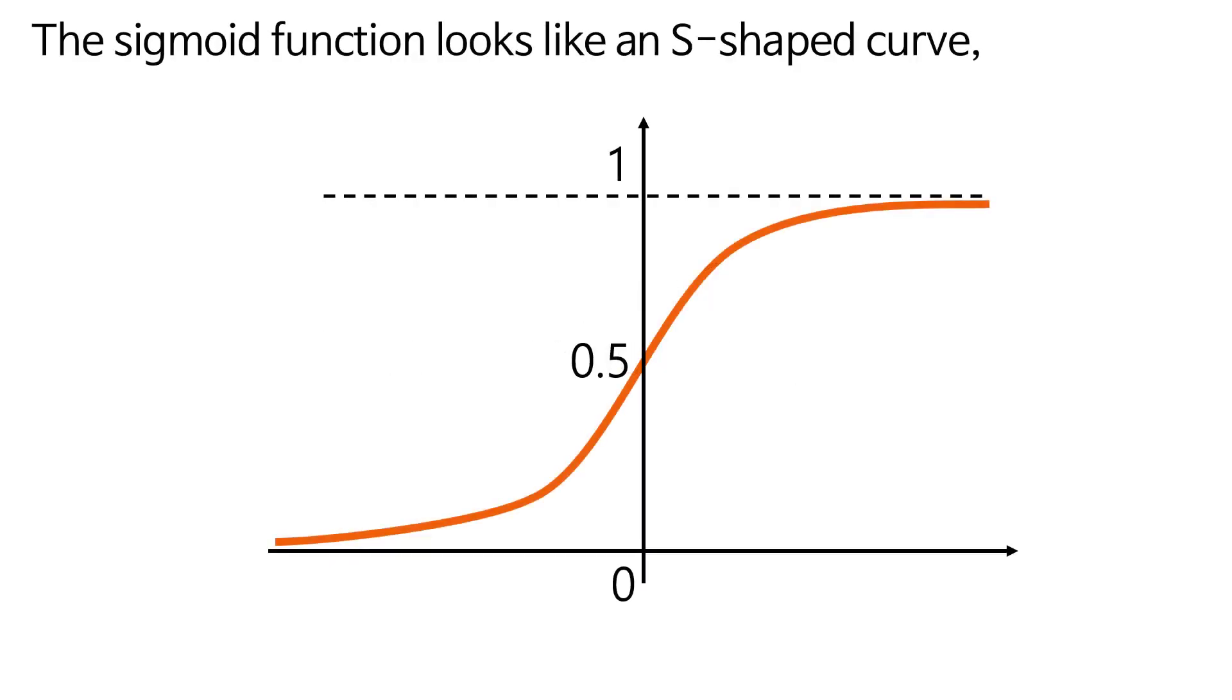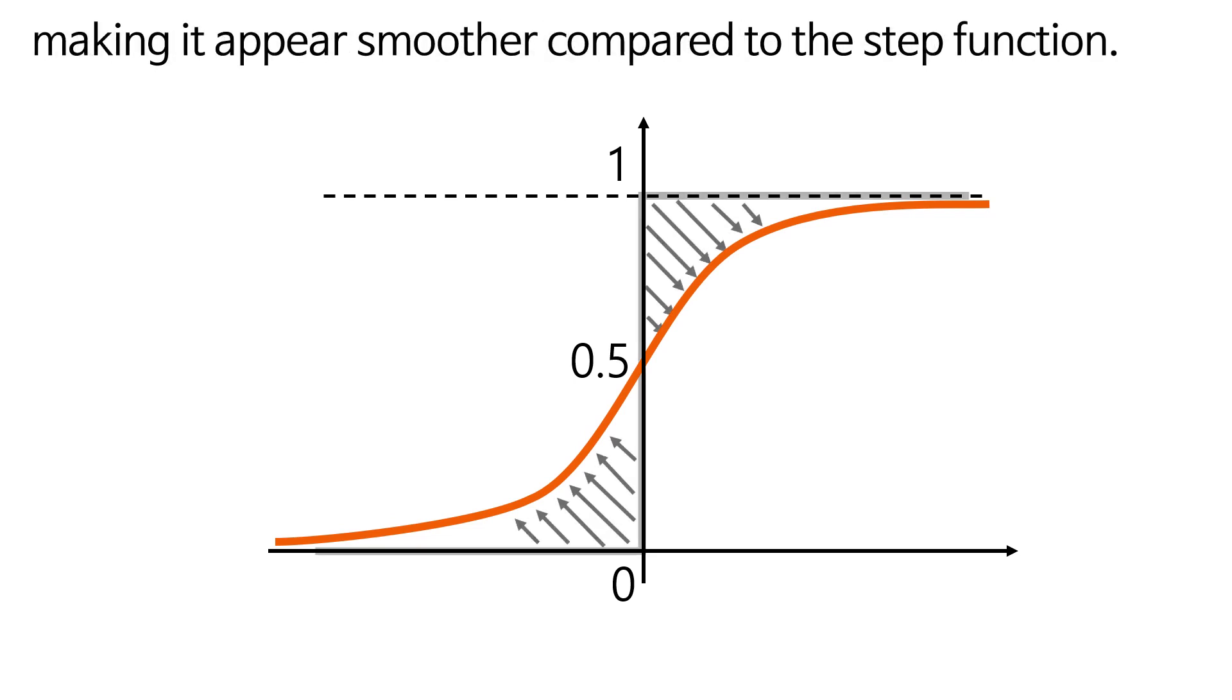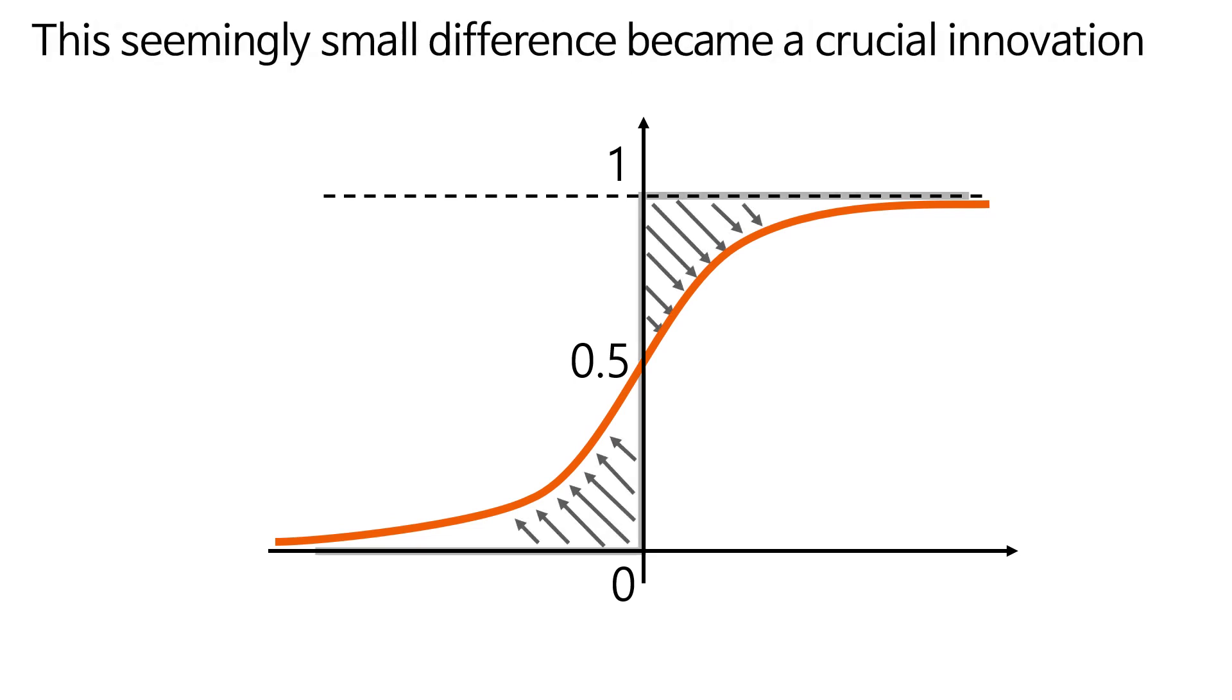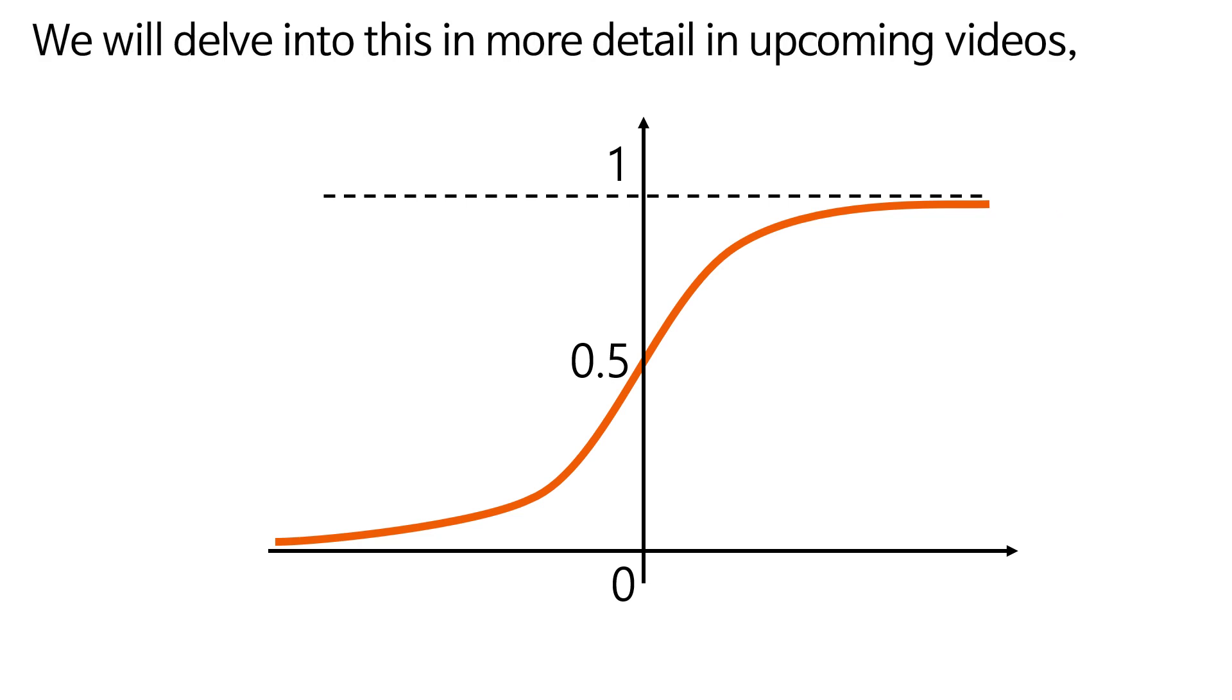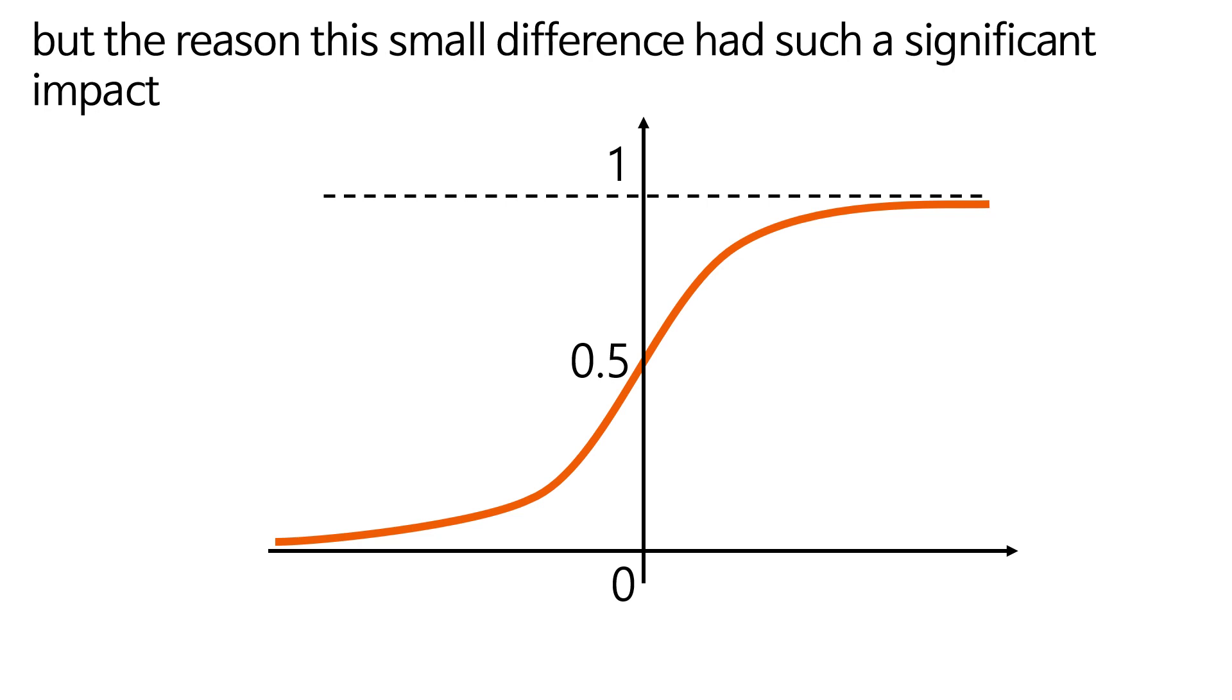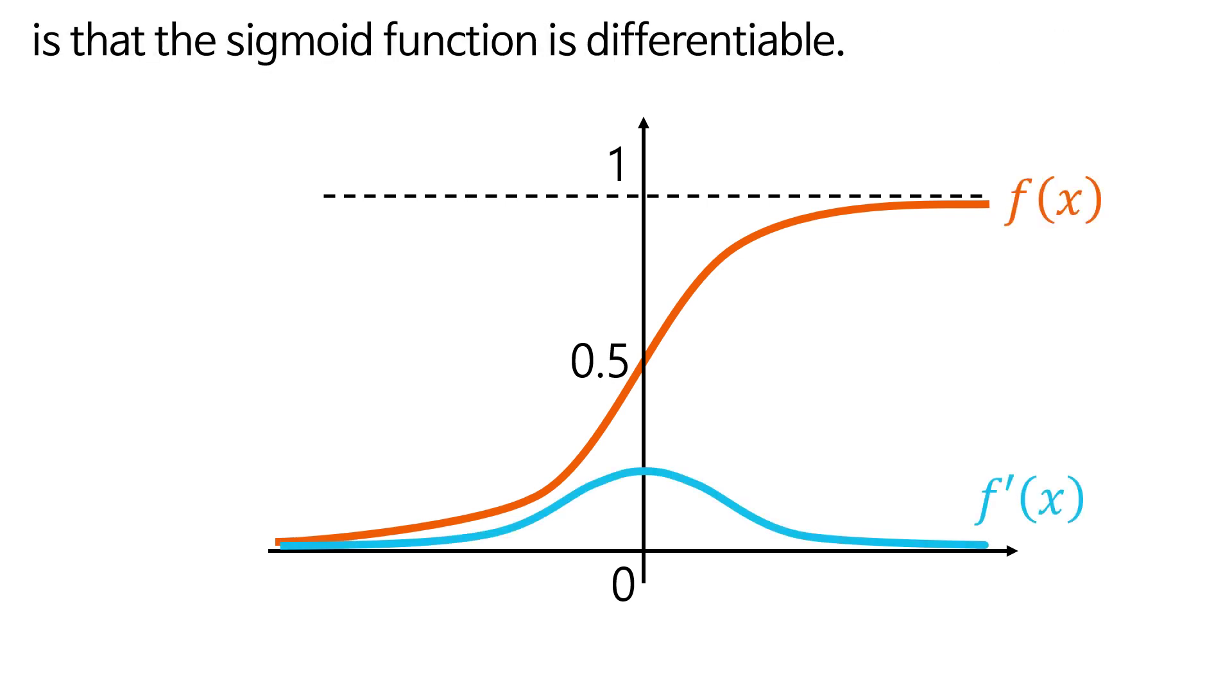Chapter 2: the sigmoid function. The sigmoid function looks like an S-shaped curve, making it appear smoother compared to the step function. This seemingly small difference became a crucial innovation that opened the era of multilayer neural networks. We will delve into this in more detail in upcoming videos, but the reason this small difference had such a significant impact is that the sigmoid function is differentiable.